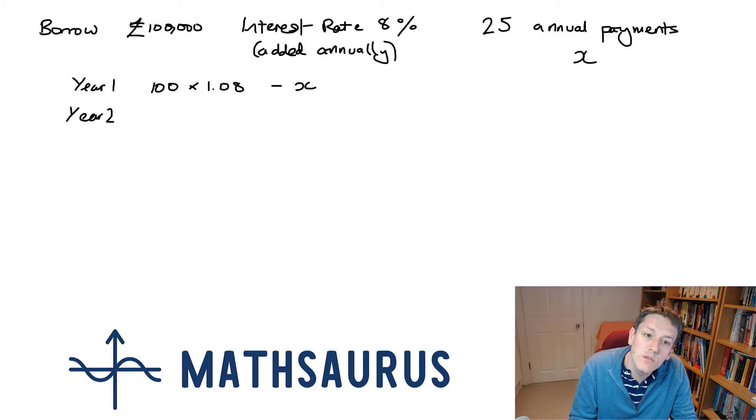At the end of year 2, we're going to take that year 1 amount and add interest on whatever's left there of 1.08 and make another payment of x.